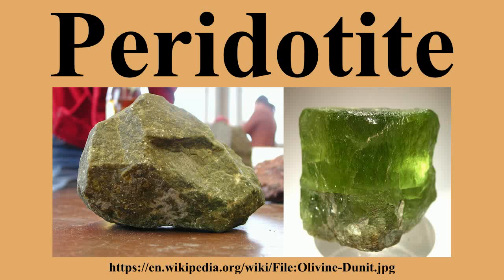Some of the nodules preserve isotope ratios of osmium and other elements that record processes that occurred when the earth was formed, and so they are of special interest to paleogeologists because they provide clues to the early composition of the earth's mantle. The word peridotite comes from the gemstone peridot, which consists of pale green olivine.